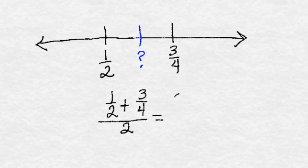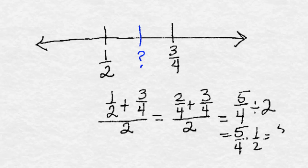1 half is the same as 2 fourths. 2 fourths plus 3 fourths is 5 fourths, and we want to divide that by 2, or in other words, take half of it. Half of 5 fourths is 5 eighths.